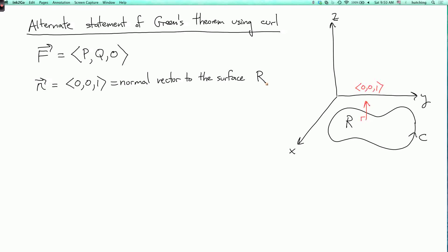Now the alternate statement of Green's Theorem is that the integral over C of F dot dr, where C is given the positive orientation as the boundary of R, is equal to the double integral over R of curl of F dot the normal vector integrated with respect to area.